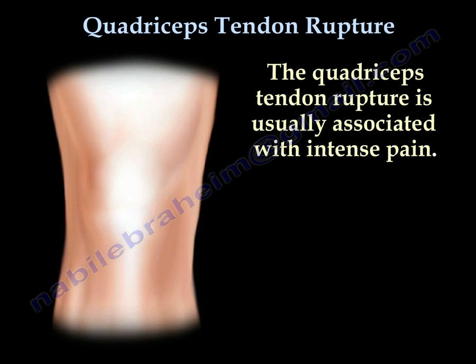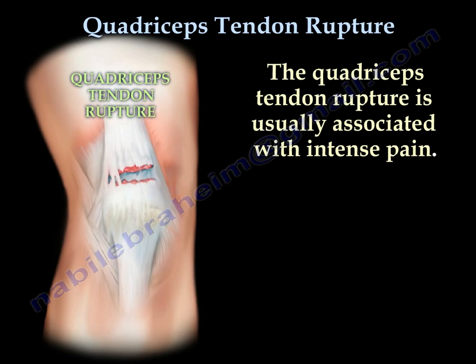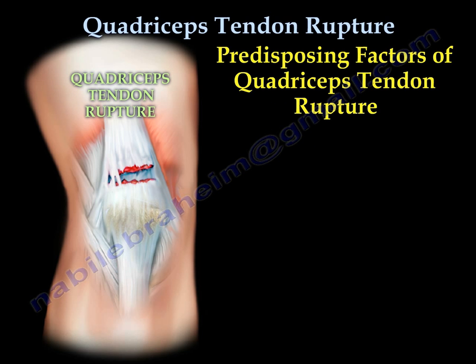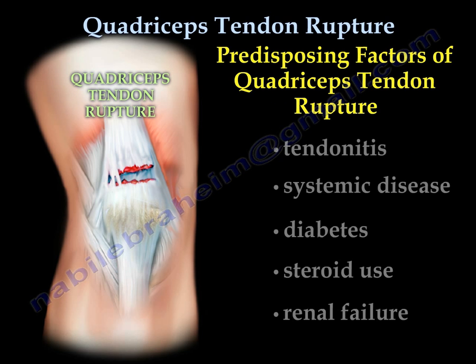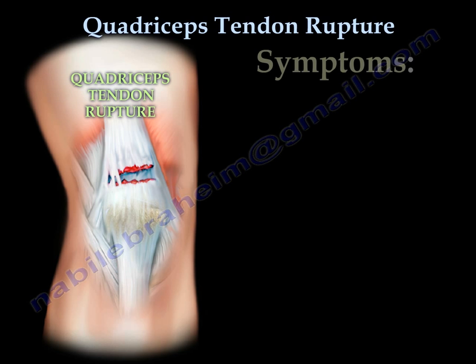The rupture is usually associated with intense pain. Predisposing factors for the rupture include tendinitis, systemic disease, diabetes, steroid use, and renal failure.